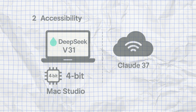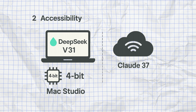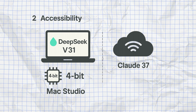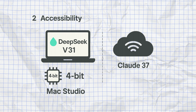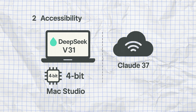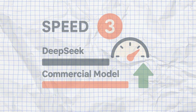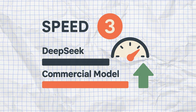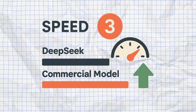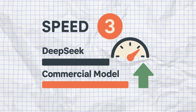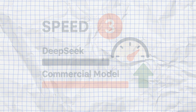Second, accessibility: as an open source model, DeepSeek V3.1 can be run locally on your computer. With 4-bit quantization, it even works on a Mac Studio with acceptable speed. Claude 3.7, on the other hand, is only available via the cloud and requires a stable internet connection. Third, speed: there are contradictory reports here. Some testers report that DeepSeek is slower than commercial models, while others speak of significant improvements compared to previous versions. My impression is that premium models generally respond faster, but the difference could vary depending on the use case.